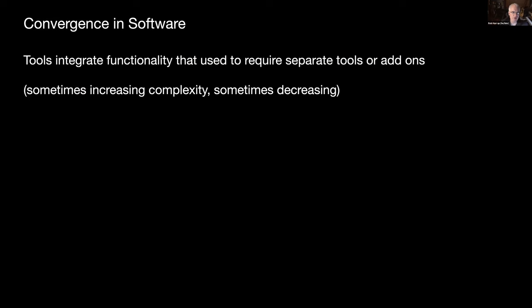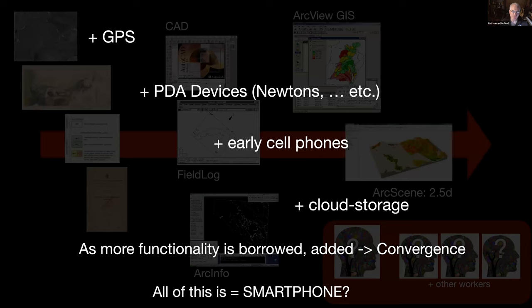I want to talk about something called convergence — the idea that over time, tools integrate functionality that used to be in separate tools. When GPS was introduced, it was yet another thing I had to do. Then I started using Apple Newtons for mapping — a PDA device to incorporate into everything else. Then a cell phone, and cloud storage. Of course, all of these things have now converged and you can do all of them with your phone. That's an example of convergence: things converging down to one tool.